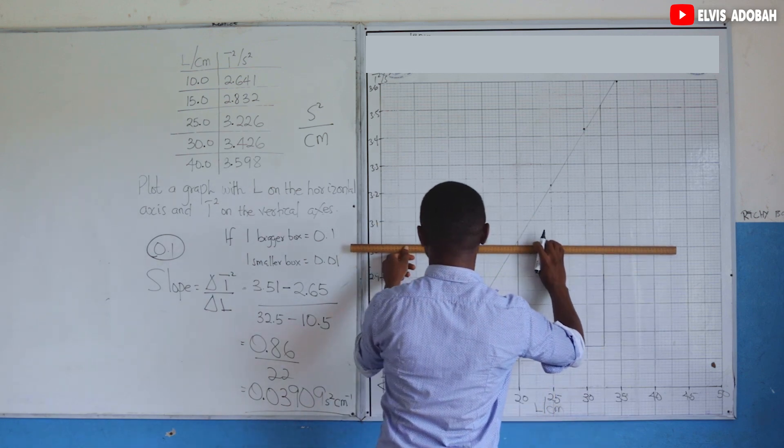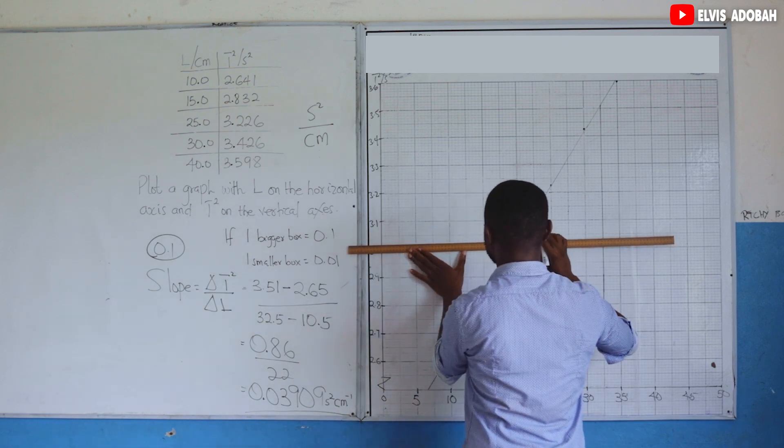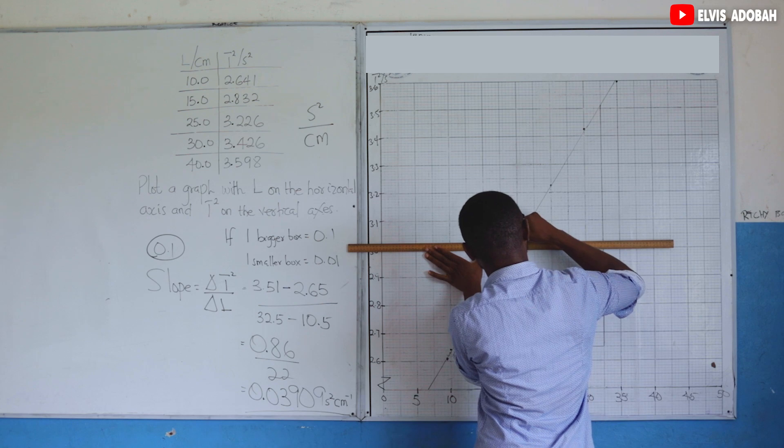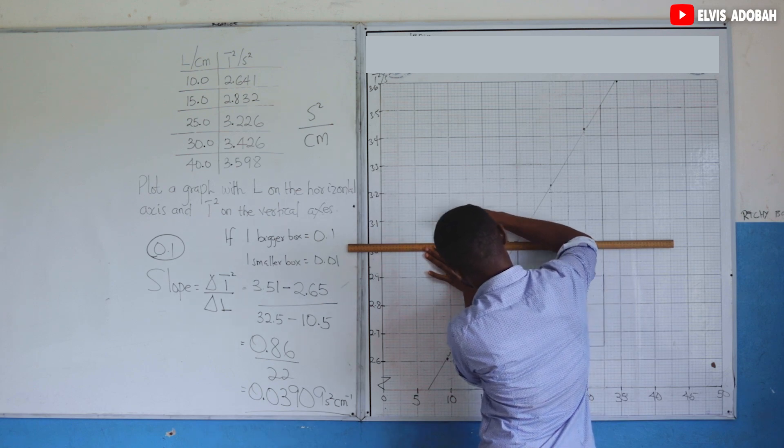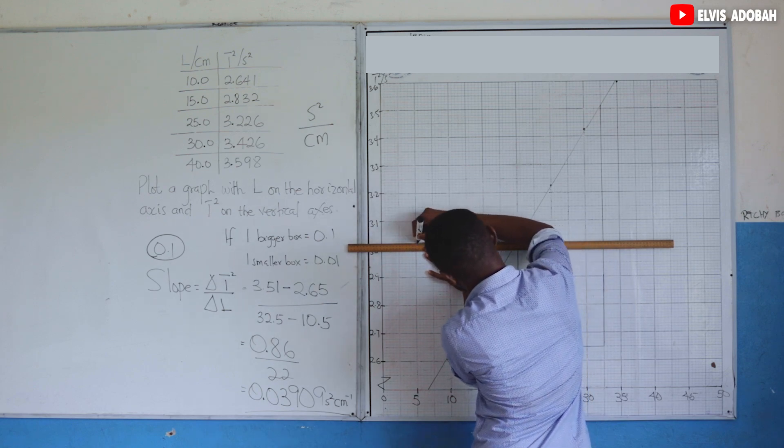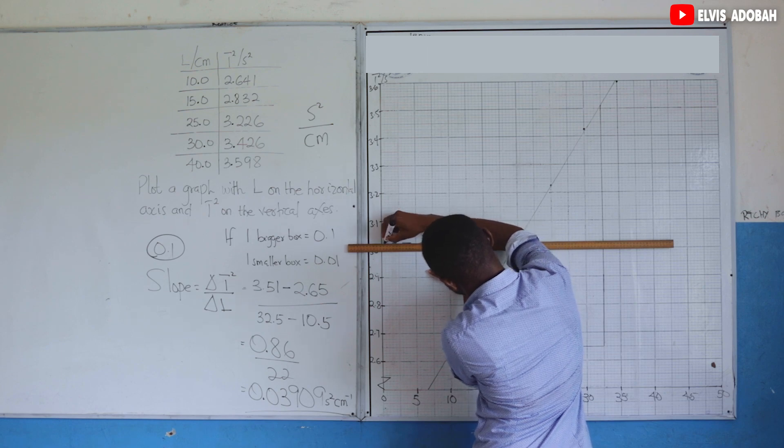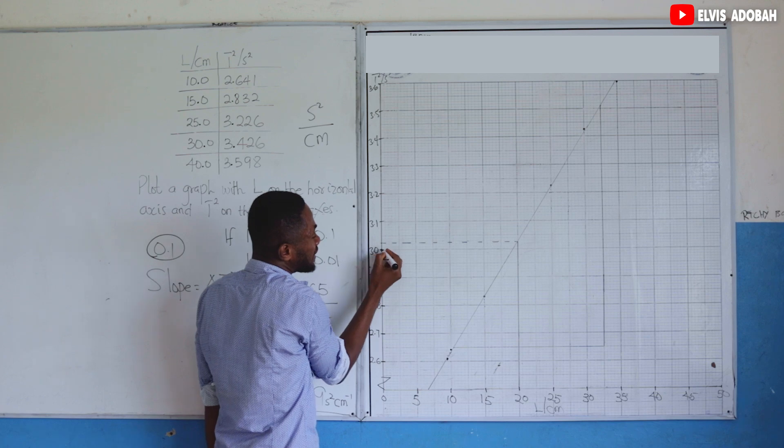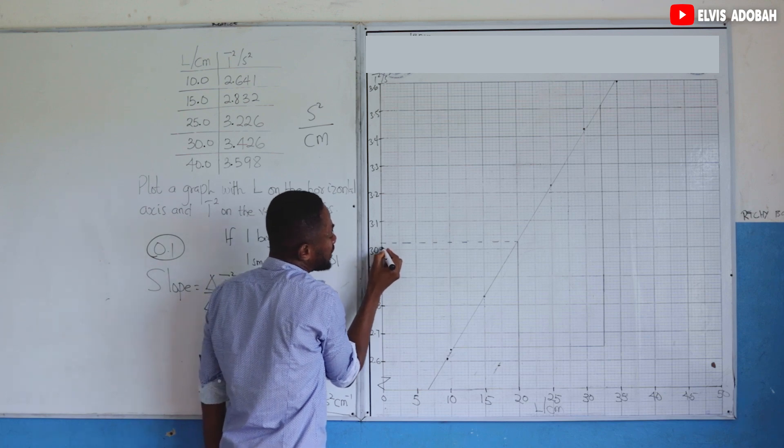Then look at its corresponding value on the horizontal axis. Over here we have 3.0, we have 3.01, 3.02.